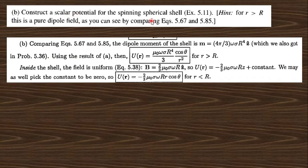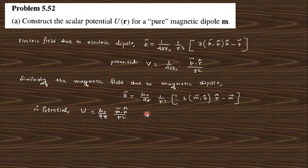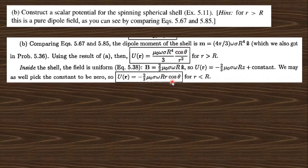Constructing a scalar potential for the spinning spherical shell: equations 5.67 and 5.68 give the magnetic dipole for a rotating spherical shell. For a spherical shell that is rotating, the magnetic dipole moment takes a specific form, and the corresponding potential energy is found using that relation. At r equals R, the two expressions are not equal.